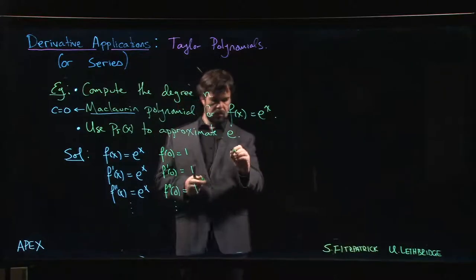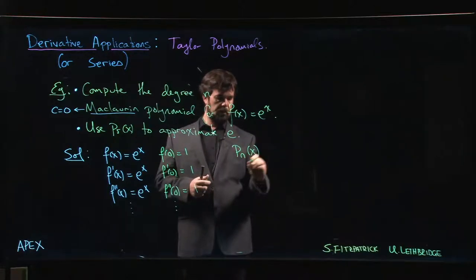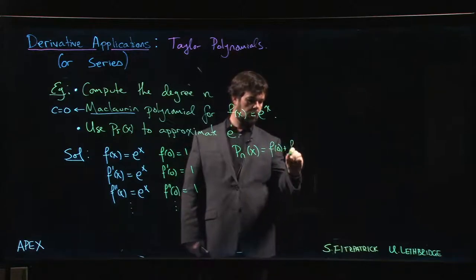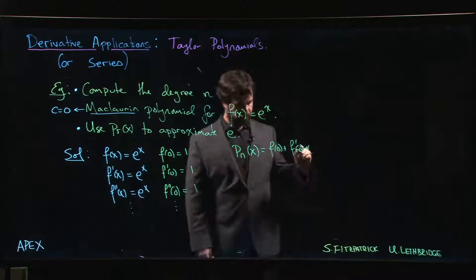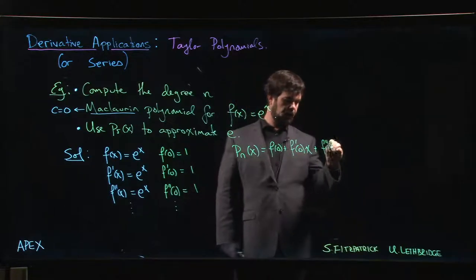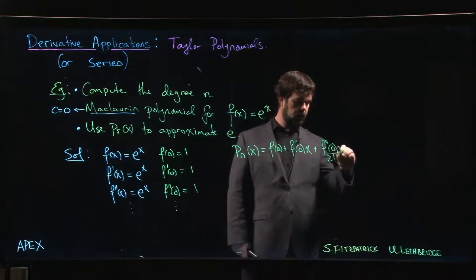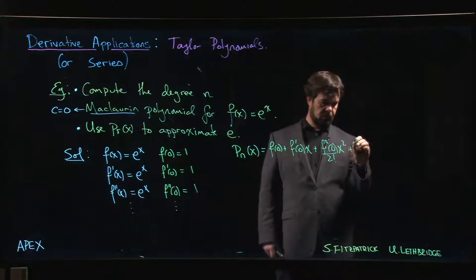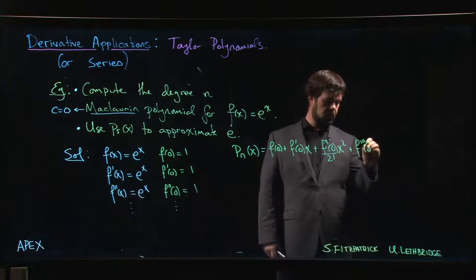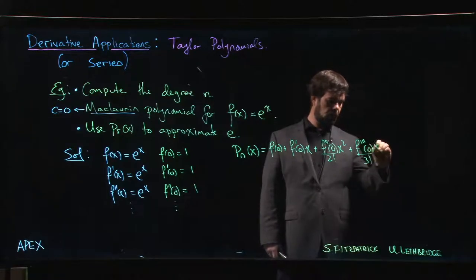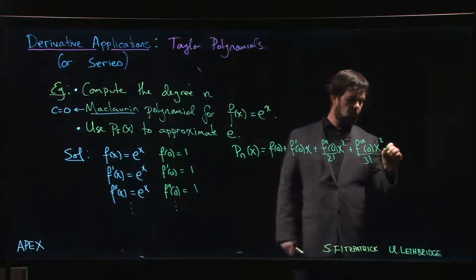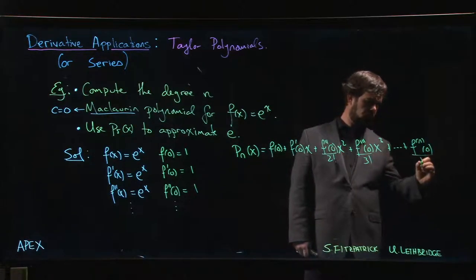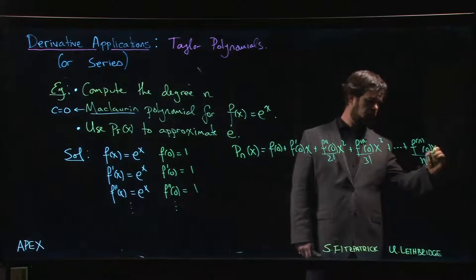So our Maclaurin polynomial Pn, we know that the definition looks like this: f(0) plus f'(0) times x plus f''(0) over 2 factorial times x squared. Let's go to f''' for good measure. Why not? f'''(0) over 3 factorial times x cubed, and so on down to that last derivative over n factorial times x to the n.